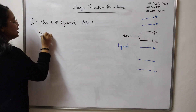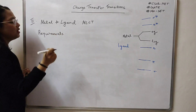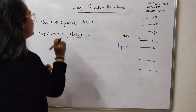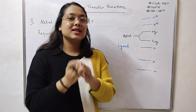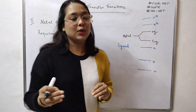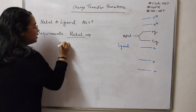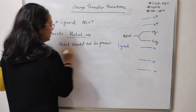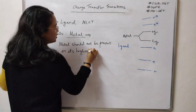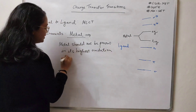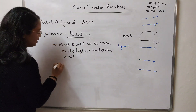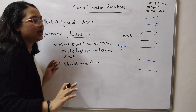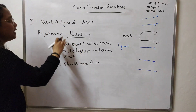Let's look at the requirements with respect to the metal and the ligand. With respect to the metal: over here, the metal is donating its electrons to the ligand, so obviously the metal must have electrons in order to donate them. The first requirement is that the metal should not be present in its highest oxidation state — the metal must have electrons.